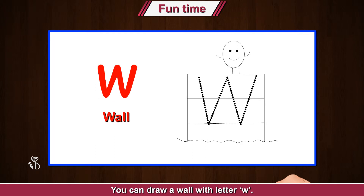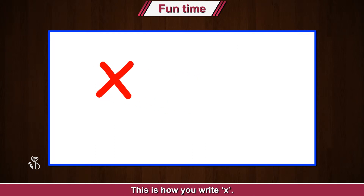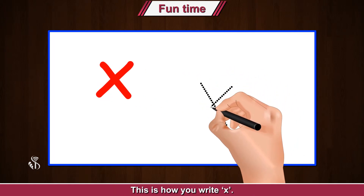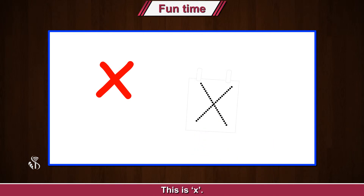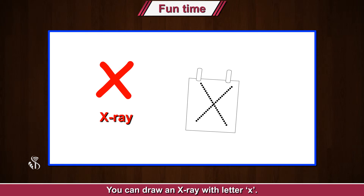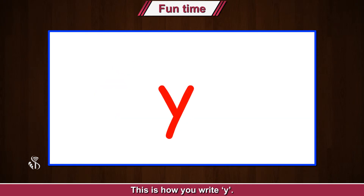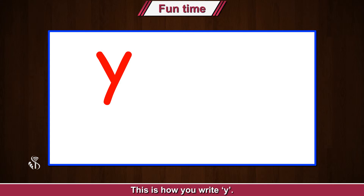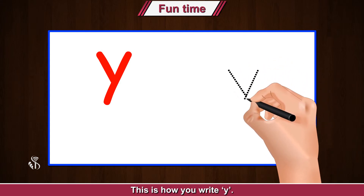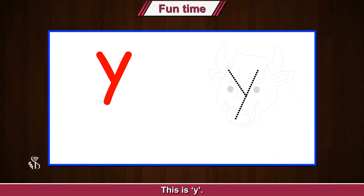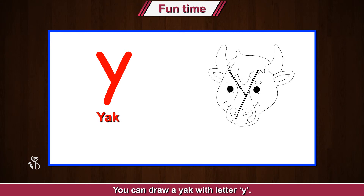This is how you write X. This is X. X for x-ray — you can draw an x-ray with letter X. This is how you write Y. This is Y. Y for yak — you can draw a yak with letter Y.